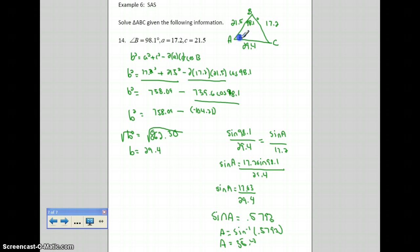So I know this is 35.4. And then it's easy for me to find angle C because I can just do 180 minus 98.1 minus 35.4, and I get angle C to be 46.5 degrees.